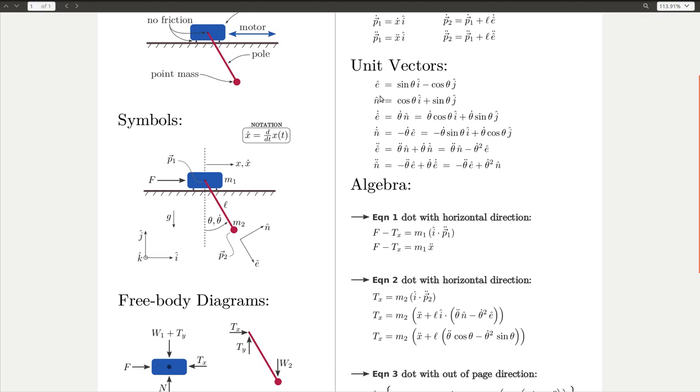Then we simply start taking derivatives. The derivative of e hat, we can go term by term and use the chain rule. Sine theta is going to be cosine theta, negative cosine theta is sine, and then the chain rule tells us we need to multiply each of those by theta dot. Now, if you look carefully, you'll see that this term here is simply n hat multiplied by theta dot, and that's what we have here.